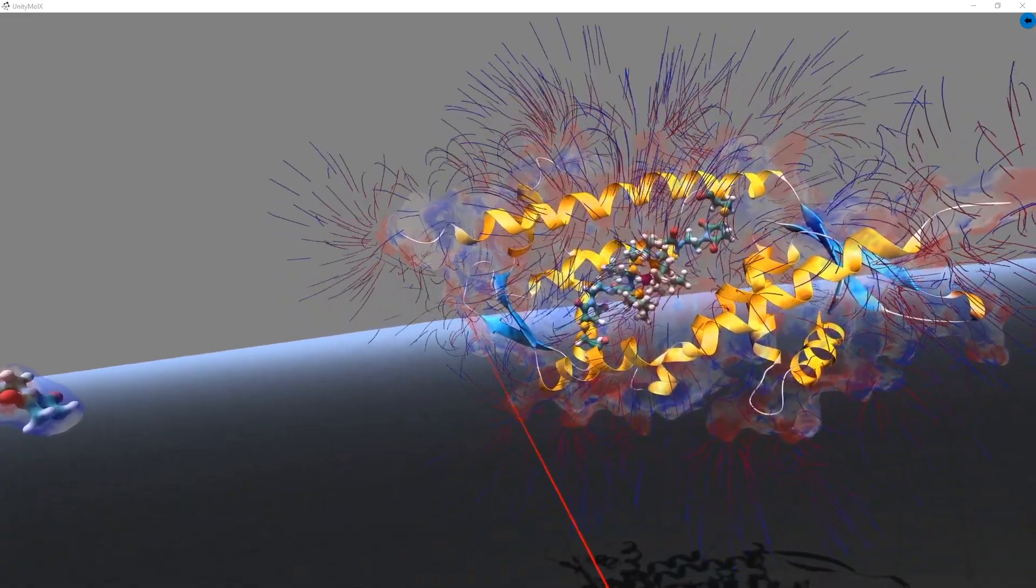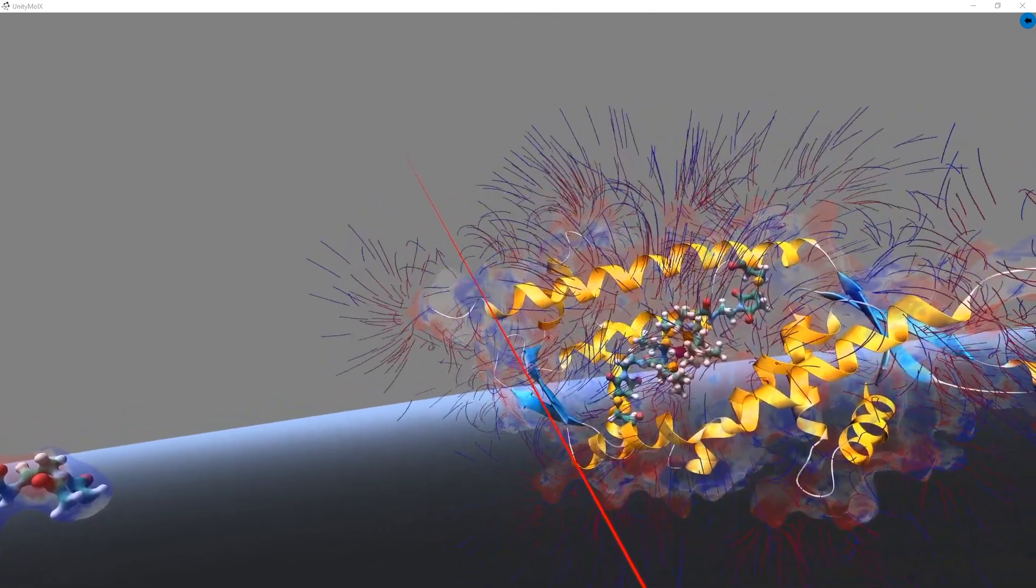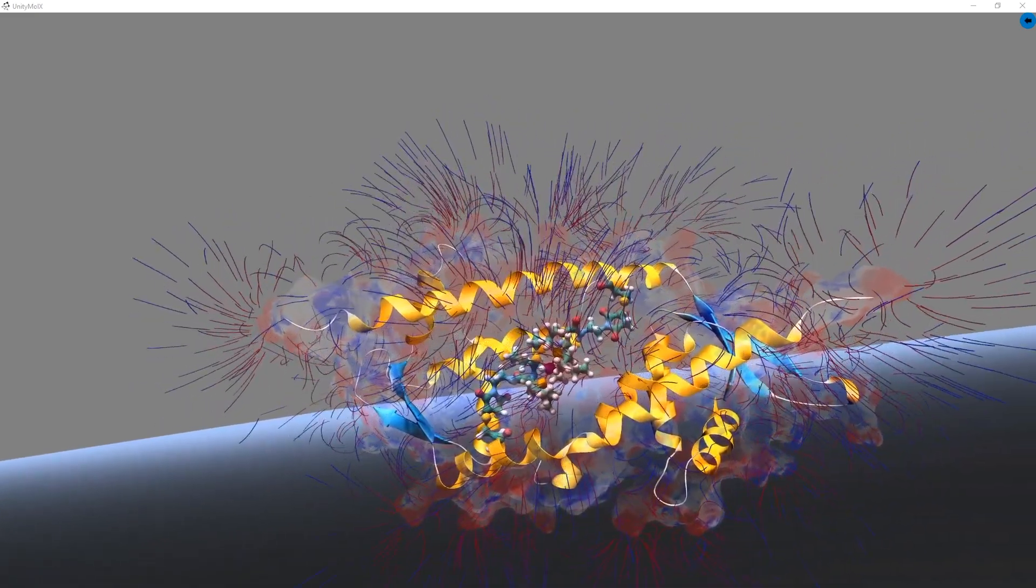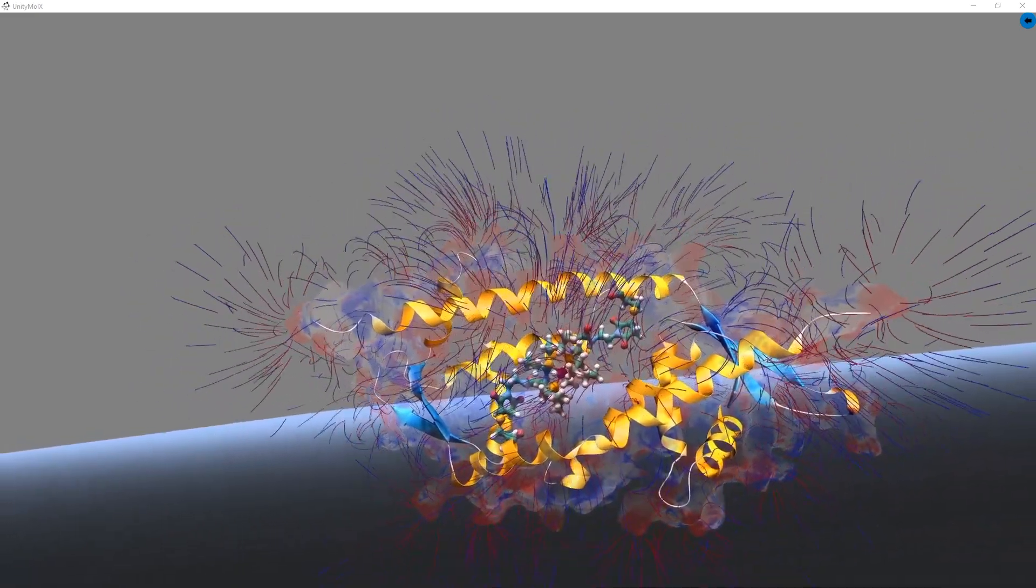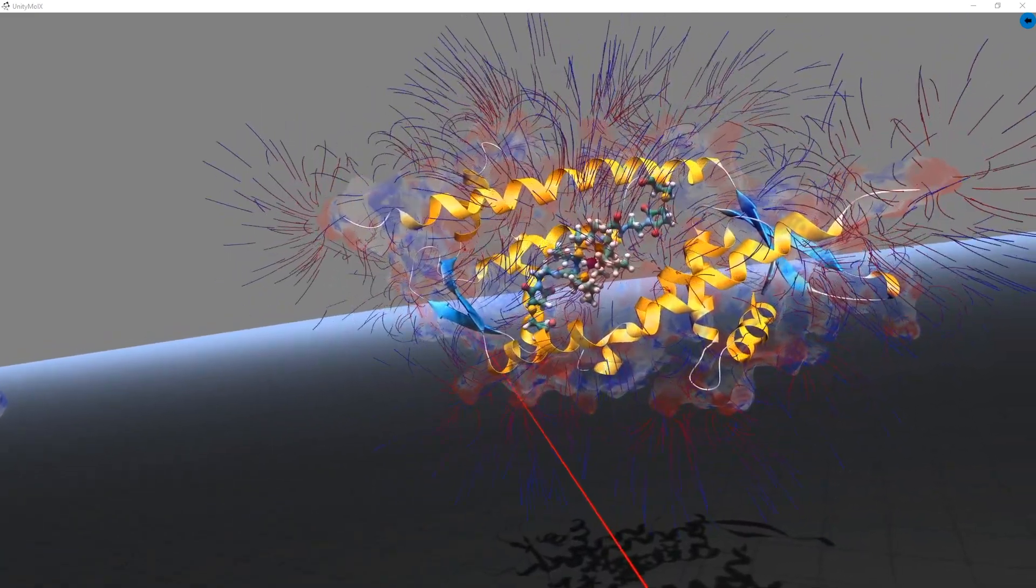We are also mapping the electrostatic surface potentials, showing red as negative, blue as positive, and white as neutral. We are also showing the electrostatic field lines, where they originate in red and terminate in blue.